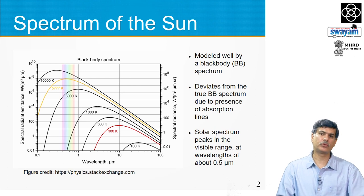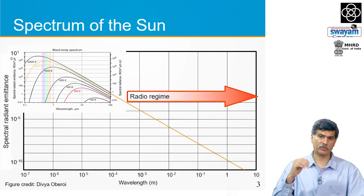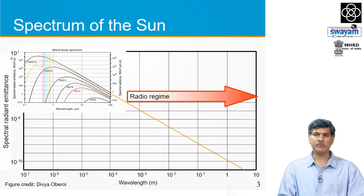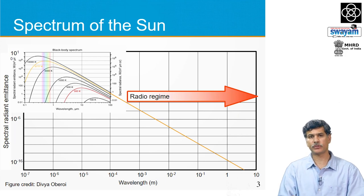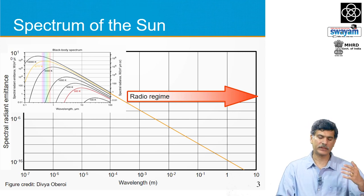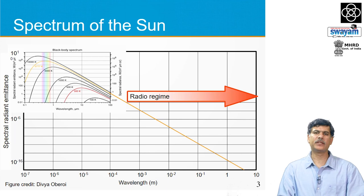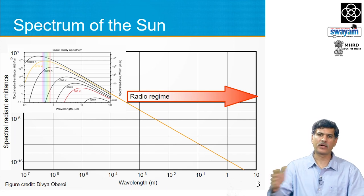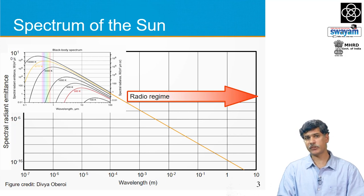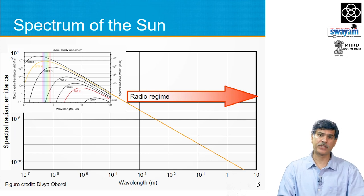The radio frequencies we want to talk about in this lecture, if I have to put them on the same plot, the radio regime is shown by the big red arrow there. You would notice that if I were to extend the black body curve corresponding to the sun into this regime, the energy being emitted by the sun in this regime is even more than 10 orders of magnitude lower than what it is emitting in the visible regime. One would wonder why is it even interesting to study a star so far from its peak. I hope that by the end of this lecture I will convince you that radio studies of the sun give you information which you could not have obtained by any other means.